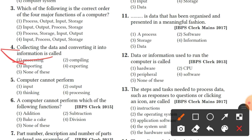Question 5: what can a computer not perform? The answer is thinking. Input, output, and processing are things computers do, but a computer cannot think.